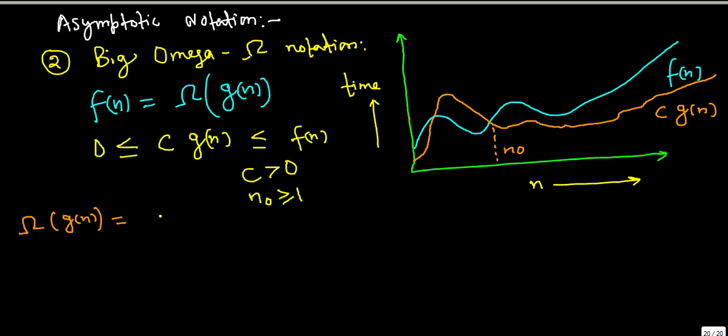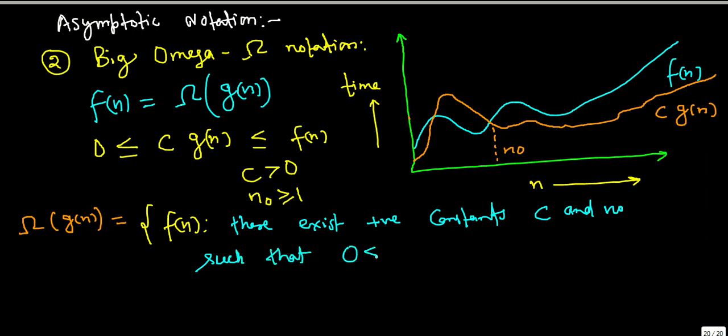Now you can define this notation formally like Omega of G(n) equal to F(n) such that there exist positive constants C and n₀ such that C·G(n) is greater than 0 and C·G(n) is less than or equal to F(n) for all values of n which is greater than or equal to n₀.